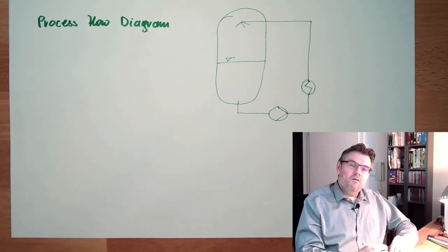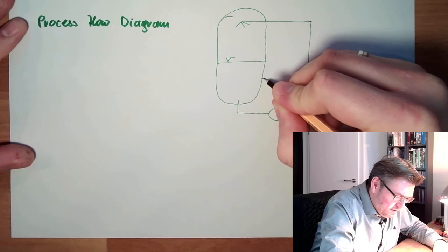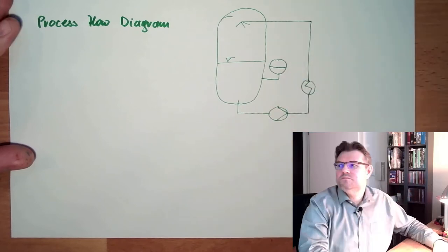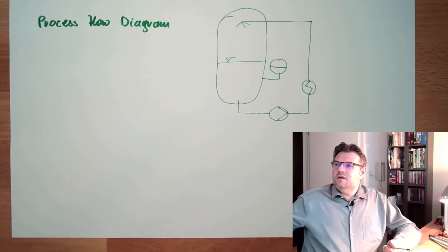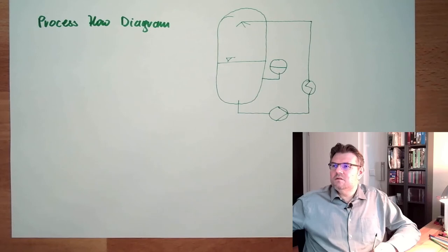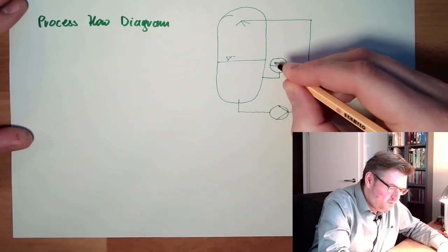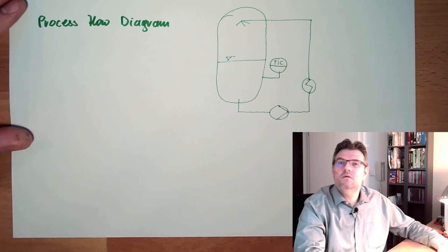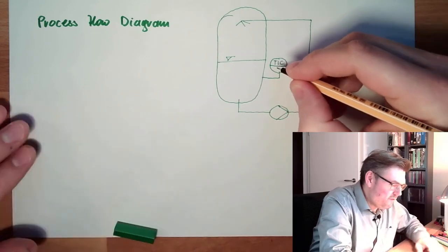There is also the possibility of adding measurement points or points of interest. I can add a symbol like this. What does this mean? There are categories — a process category. The letters used in these symbols have standardized meanings. They usually have a first letter showing the category.